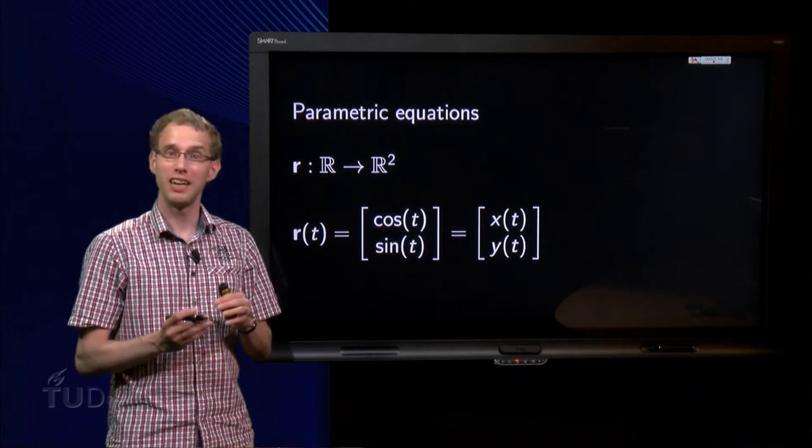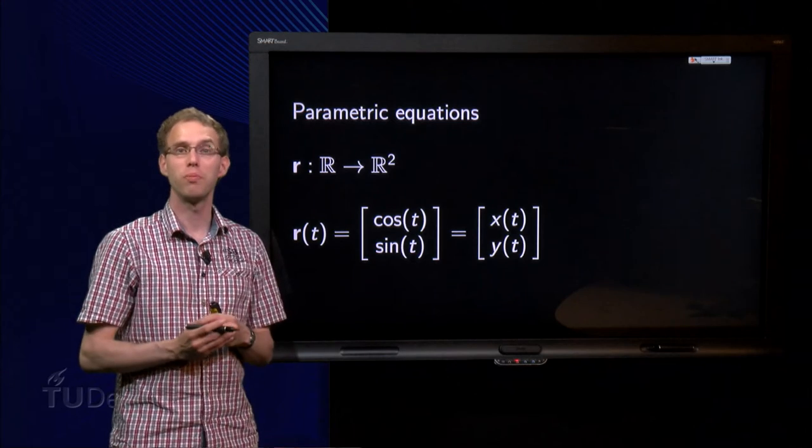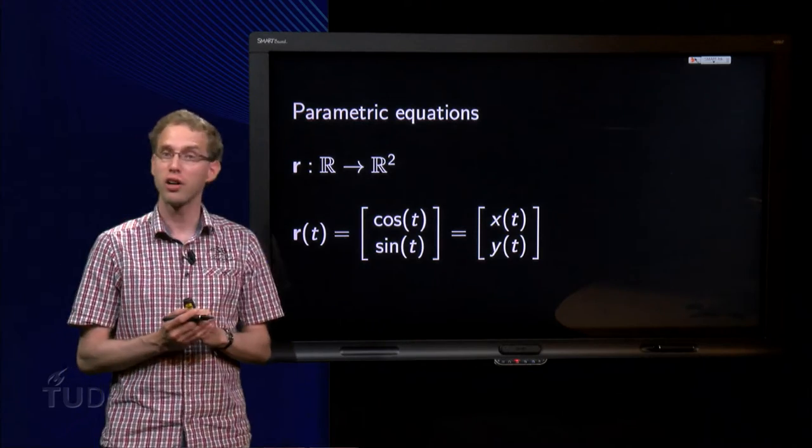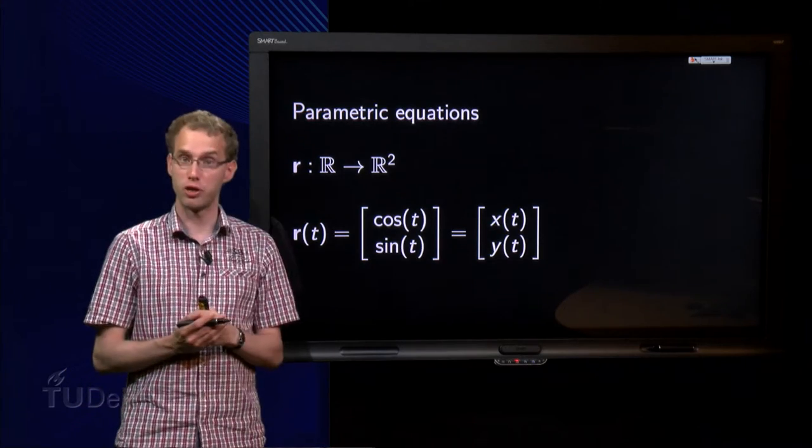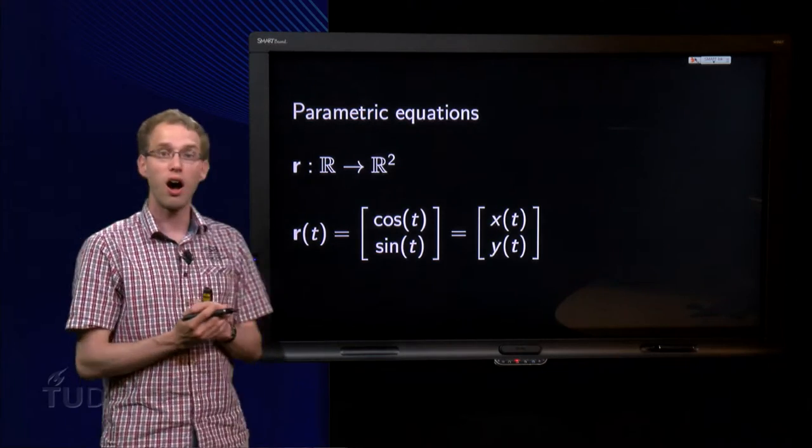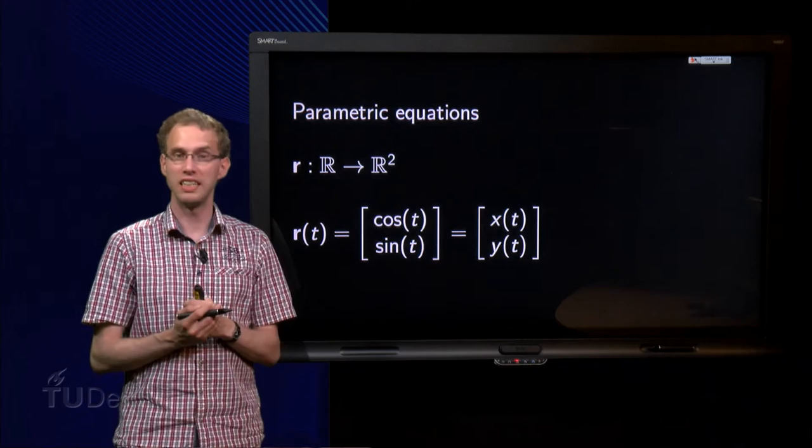First, we will start here with a slightly more complicated example which you may have already seen at high school. We have a function r going from R to R², so scalar goes in, vector goes out. r as a function of t equals (cos(t), sin(t)).